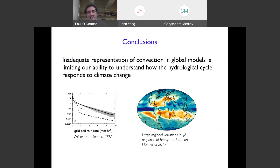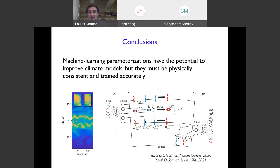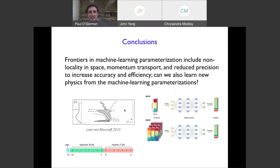To conclude: the inadequate representation of convection in global models is limiting our ability to understand how the hydrological cycle responds to climate change. Machine learning parameterizations have the potential to do better, but it's important for them to be physically consistent and trained as accurately as possible. Frontiers include non-locality in space, momentum transport, reduced precision for improved efficiency, and the question of whether we can actually learn new physics from the machine learning parameterizations. Thanks very much for your attention — I'd be happy to take questions.